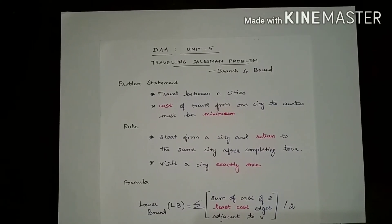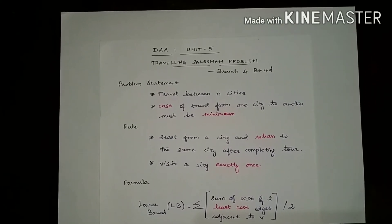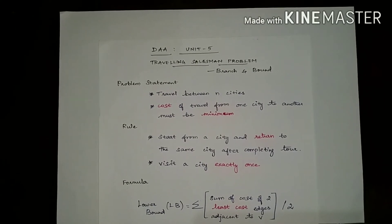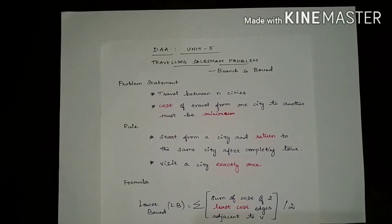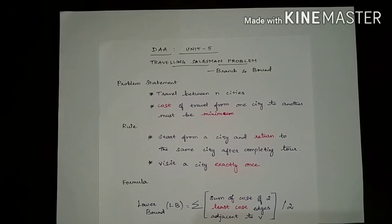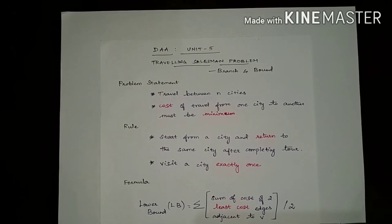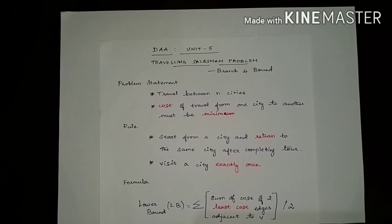Hi, this is Nancy Priya from the CS department, Perry Institute of Technology. This video is for CSE students, second year, fourth semester, 2017 regulation. The video is from the subject Design and Analysis of Algorithms, from Unit 5: Coping with Algorithmic Path. The topic I'm going to discuss is the Traveling Salesman Problem using Branch and Bound.